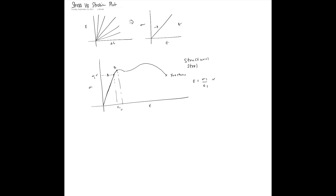After point B, even if you remove the forces, the material is not going to regain its shape. That's the onset of plastic deformation. Plastic deformation by definition is permanent deformation, while elastic deformations are temporary.